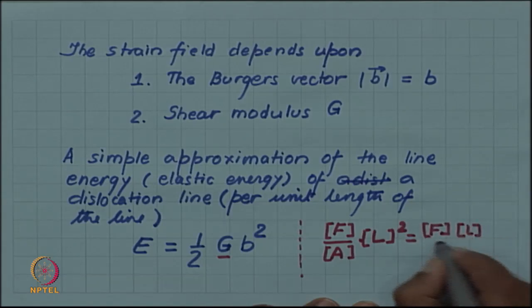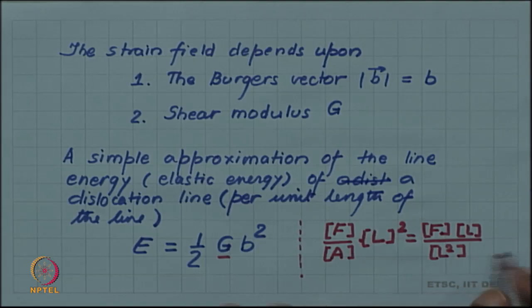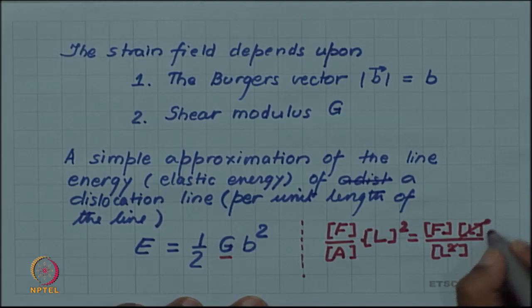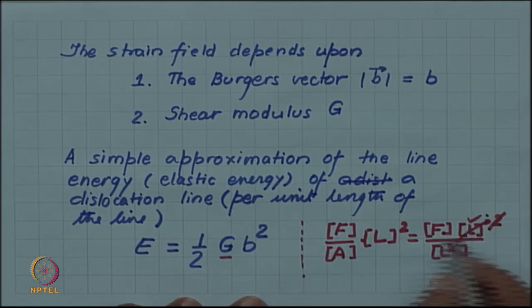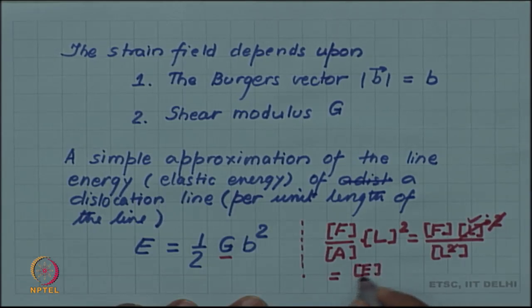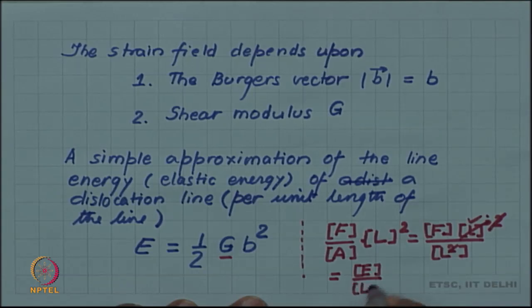We can then write this as F into L divided by area is L square. We can cancel and this is L square. I am only cancelling the L square. F into L becomes the energy, and there is energy per unit length. It is energy per unit length.